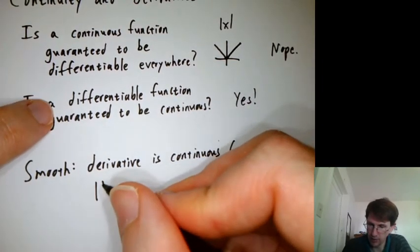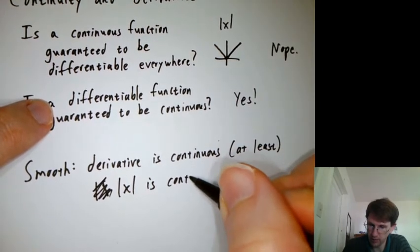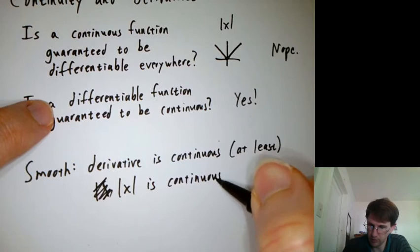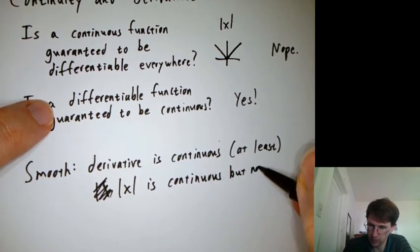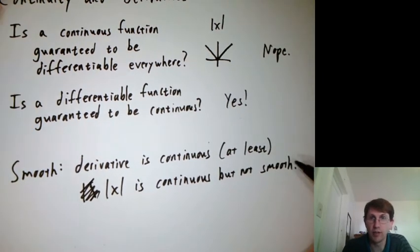So absolute value of x. Let's try this again. It's continuous, but not smooth. It's also not differentiable.